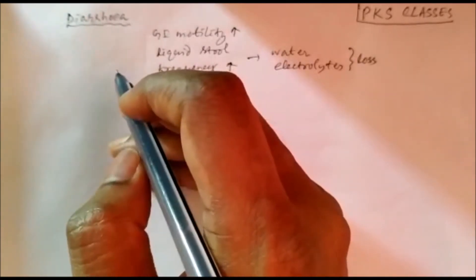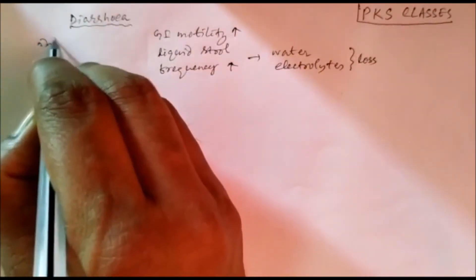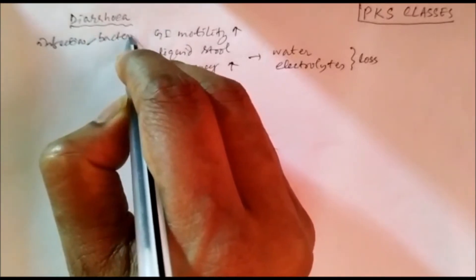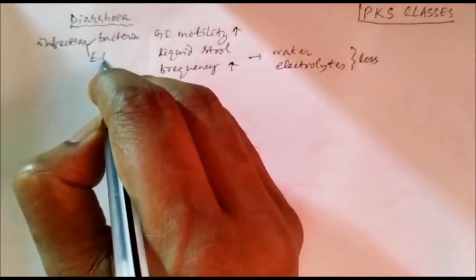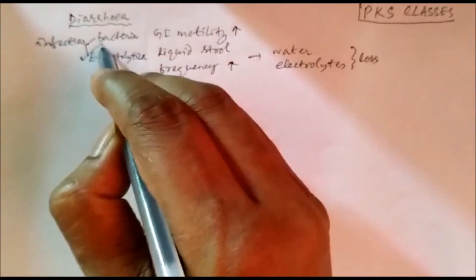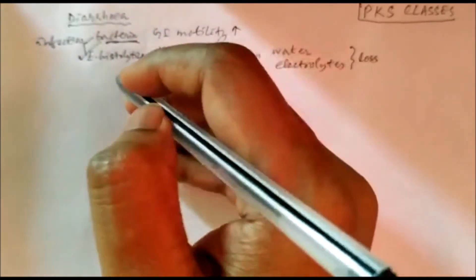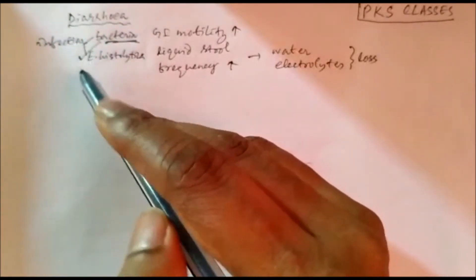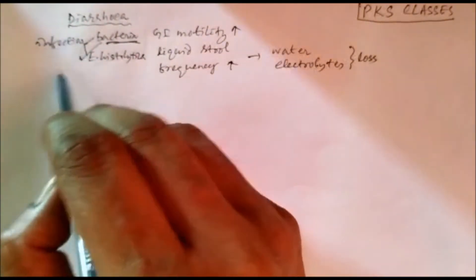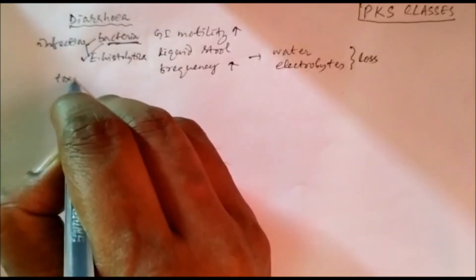The main causes of diarrhea can be infection — infection with bacteria or infection with a protozoa like Entamoeba histolytica. Most cases the infection is caused by Entamoeba, and very rarely it is a bacterial infection. There can also be other causes like toxins or certain drugs.